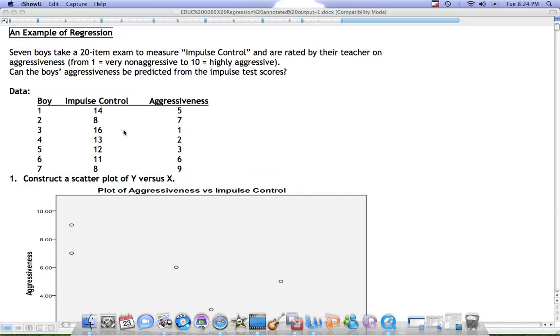In this example, we have two measures on each boy in the study and the goal is to predict the boys aggressiveness just by knowing their impulse control score.